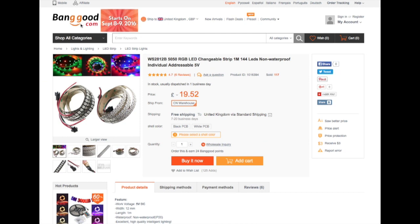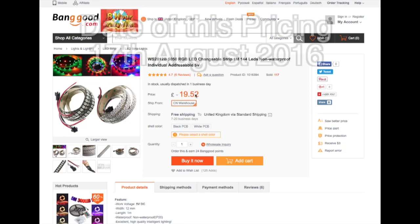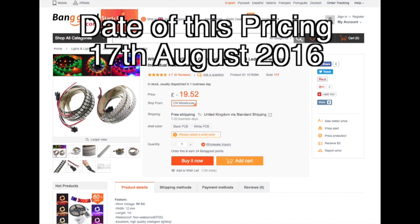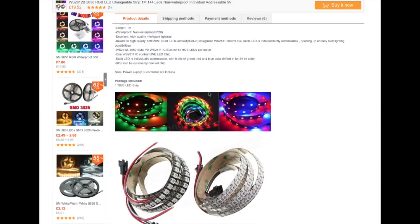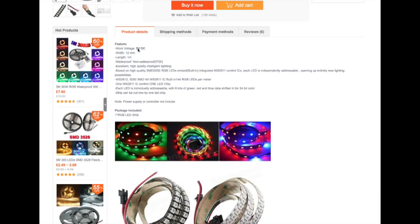So here's the Banggood website here. And these are the ones I chose. WS2112B 5050 RGB LED changeable strips. Now, you can buy these with just 30 LEDs per metre, which is a lot cheaper, or 60 LEDs per metre. But actually, for the amount of LEDs, this 144 one actually works out cheaper. As I say, that makes them 13 and a half pence each. Now, let's have a look here. 5 volts DC.